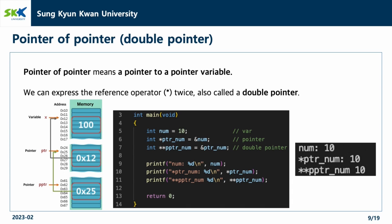The next concept is a pointer of a pointer. Pointer of pointer means a pointer to a pointer variable. We can express the reference operator asterisk twice, also called a double pointer, as you can see in the example code below. Since the variable pptr_num is storing the address of the address of the variable num, we can get the num value by putting two asterisks right before pptr_num.